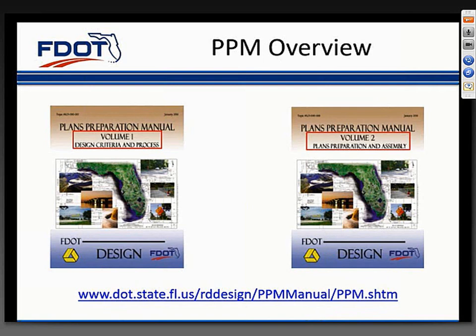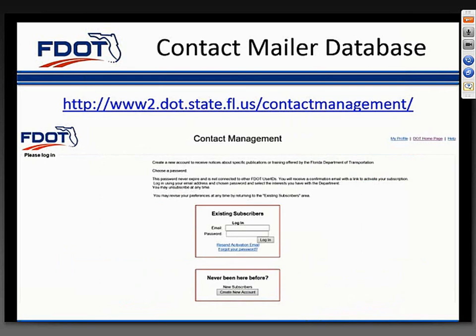The PPM can be found online at the web address shown on the screen. Please remember, if you want to receive notification of future updates of the PPM, please make sure you sign up to receive the department's contact mailer announcements. When users register in this database, we're able to email important information on topics they select, such as updates, bulletins, and training. To register or update personal contact information, topics of interest, and other profile information, you can access the contact management database at the website shown here.